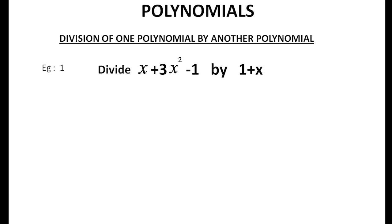In every division of a polynomial, both dividend and divisor must first be in standard form. What is the standard form? Standard form means the highest power term comes first. That is, ending with the constant term. Now, the dividend x plus 3x squared minus 1 needs to be written in standard form.